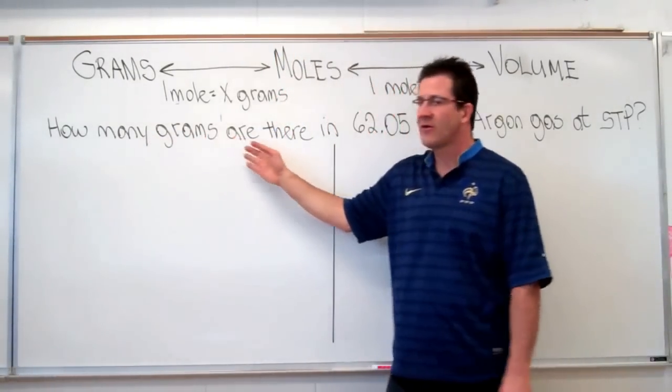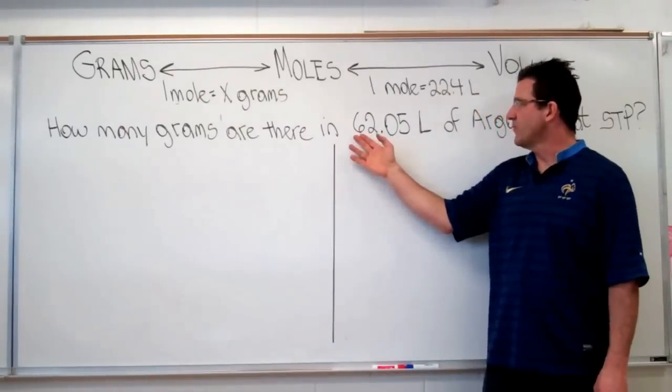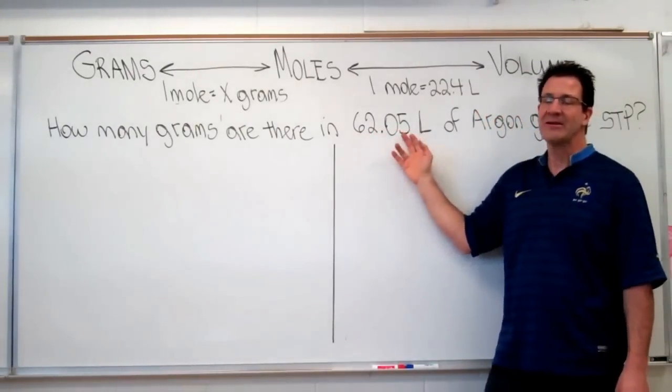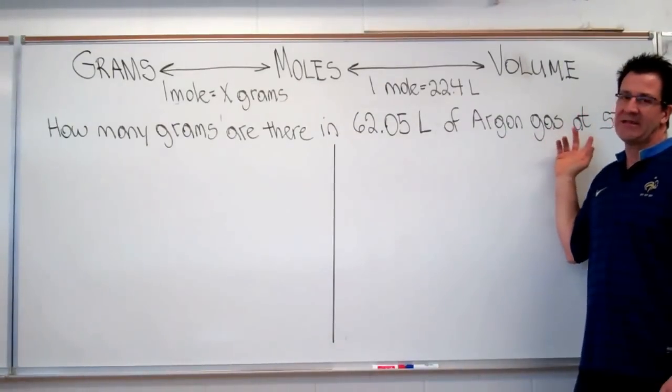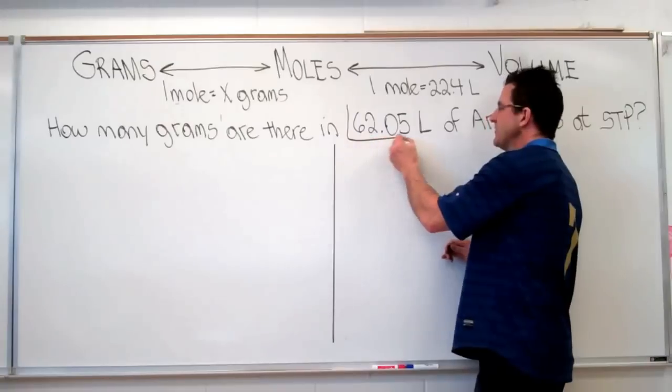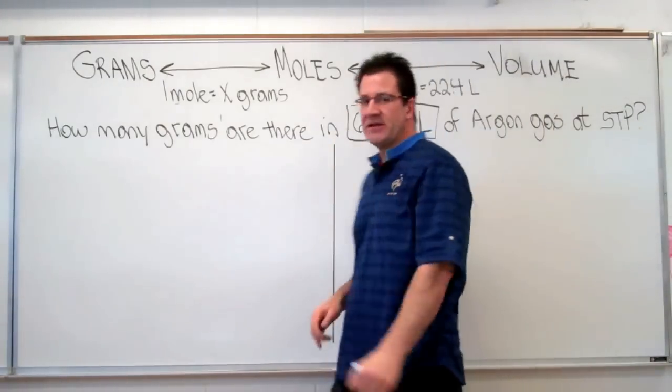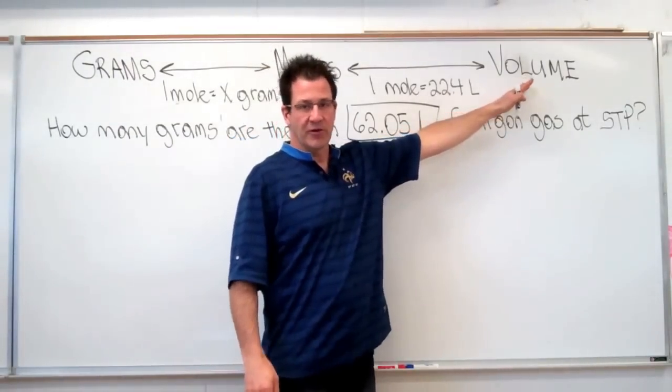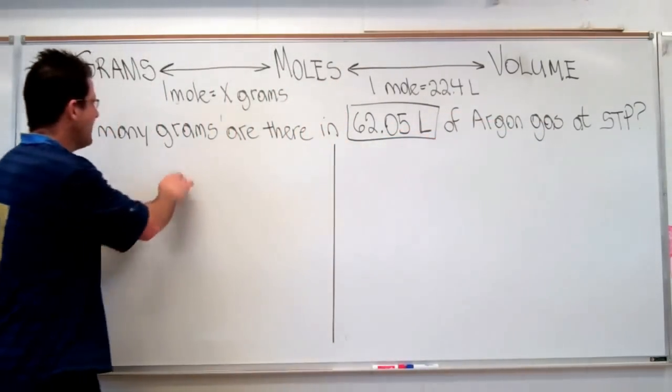In this case, it says how many grams are there in 62.05 liters of argon gas at standard temperature and pressure. So you can see we've been given liters. Liters is volume, so we're going to start here with the volume. And we want to know how many grams.